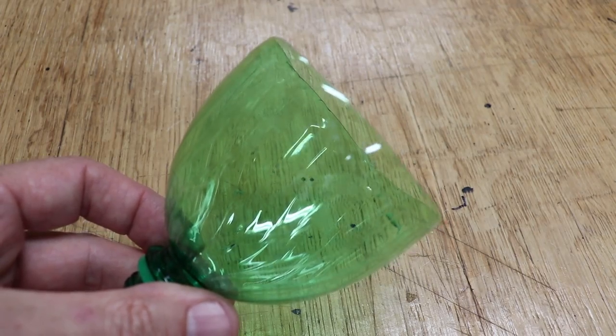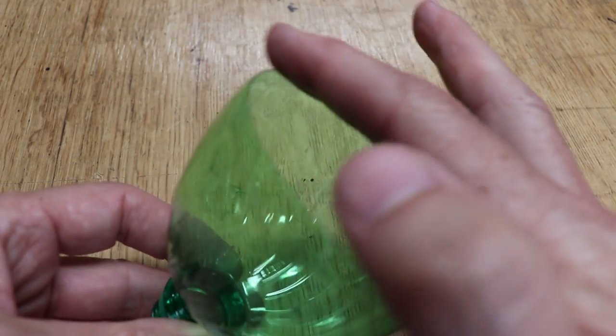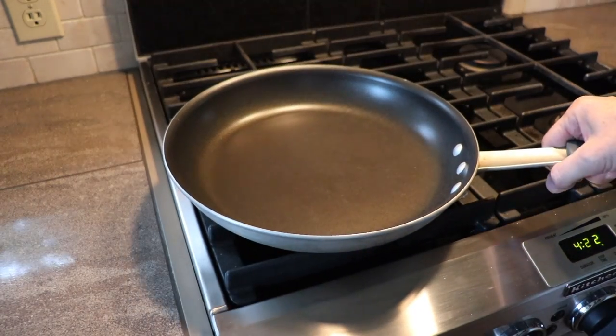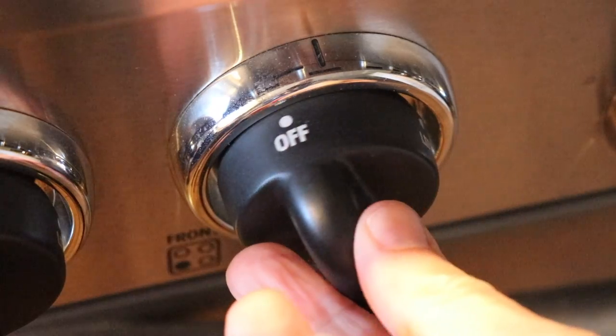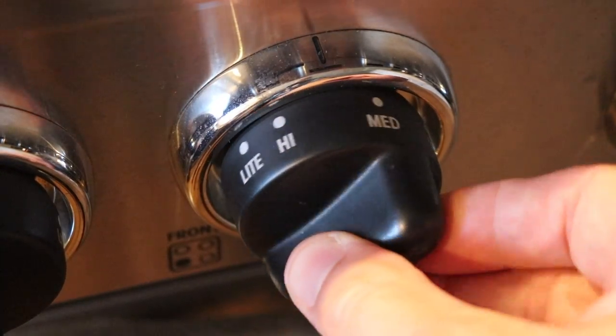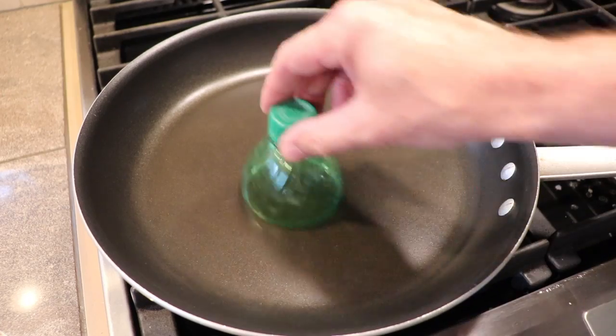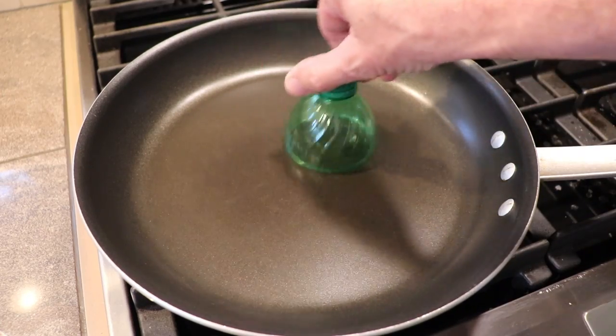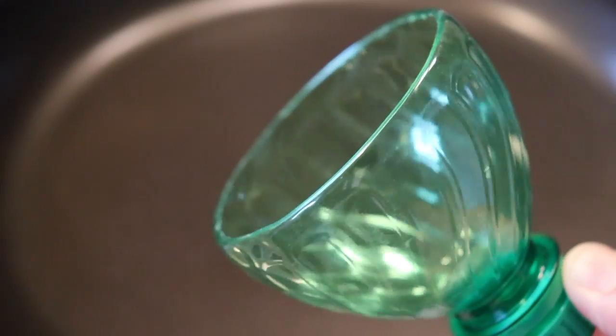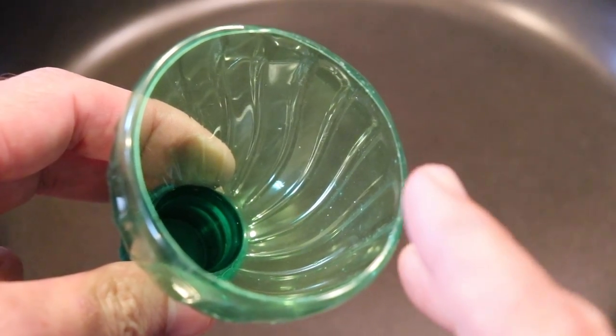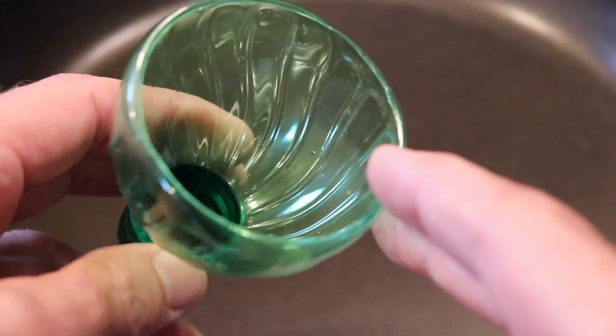This step isn't necessary, but sometimes the top edge can be a little rough after you've cut it. Let me show you a way to fix that. A non-stick fry pan works best. Put the heat on medium to low, then once the pan is heated, take the pop bottle and run it around in the pan for a five count. When you're done, you'll have this nice rounded smooth edge. If it didn't work the first time, try it for another four or five seconds.